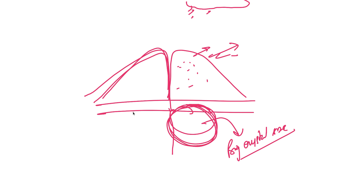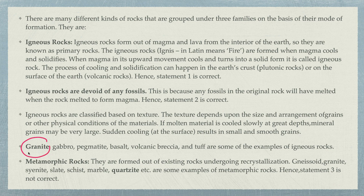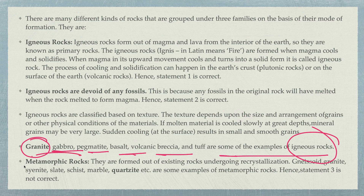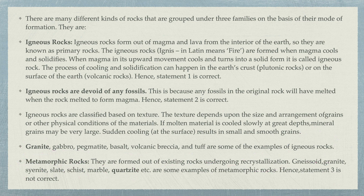If you apply excessive heat or pressure to existing rocks, they convert to metamorphic rock — that's called recrystallization. Examples are quartzite, marble, schist, and slate. So the question is likely coming from this concept — quartzite is metamorphic, not igneous.